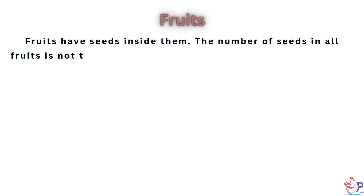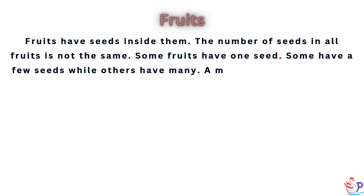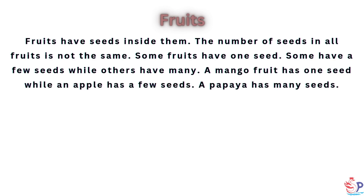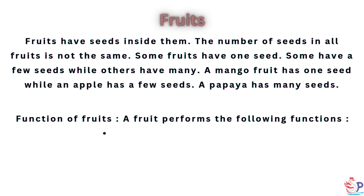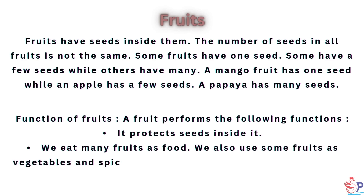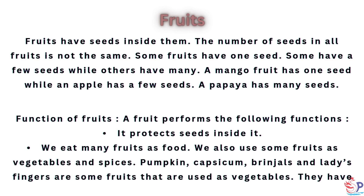Fruits have seeds inside them. The number of seeds in all fruits is not the same. Some fruits have one seed, some have a few seeds, while others have many. A mango fruit has one seed while an apple has a few seeds, and a papaya has many seeds. A fruit protects seeds inside it. We eat many fruits as food, and also use some fruits as vegetables and spices. Pumpkin, capsicum, brinjal and ladies' fingers are some fruits used as vegetables.